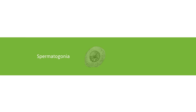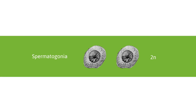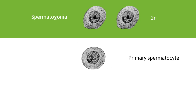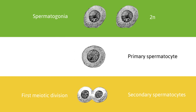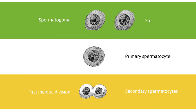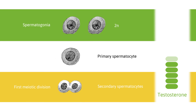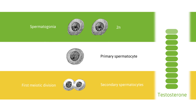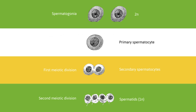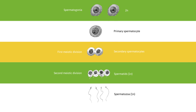The spermatogonia divide by mitosis: one daughter cell remains a spermatogonia and the other becomes a primary spermatocyte. The primary spermatocyte divides by meiosis to form secondary spermatocytes. Testosterone levels rise at puberty, and the high levels of testosterone induce germ cell division and sperm production. The secondary spermatocytes divide again to form spermatids.